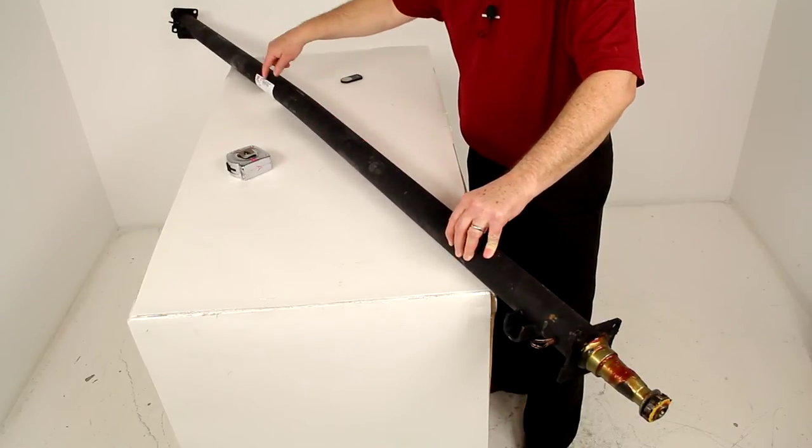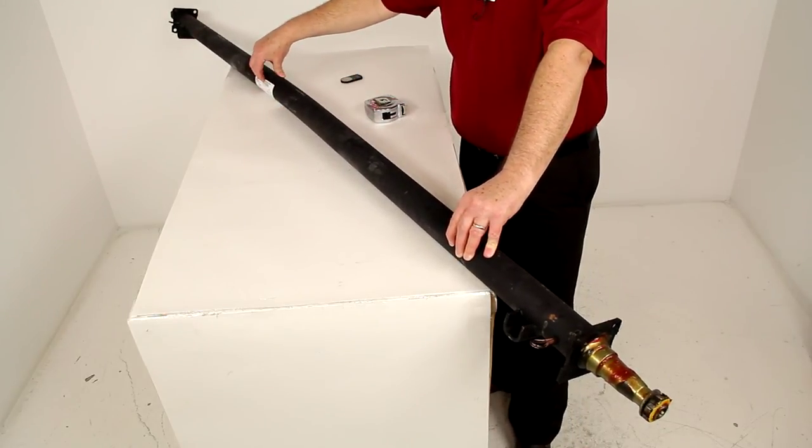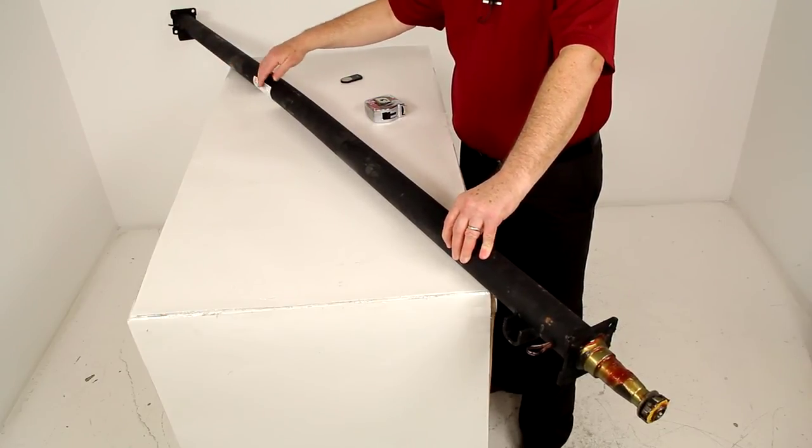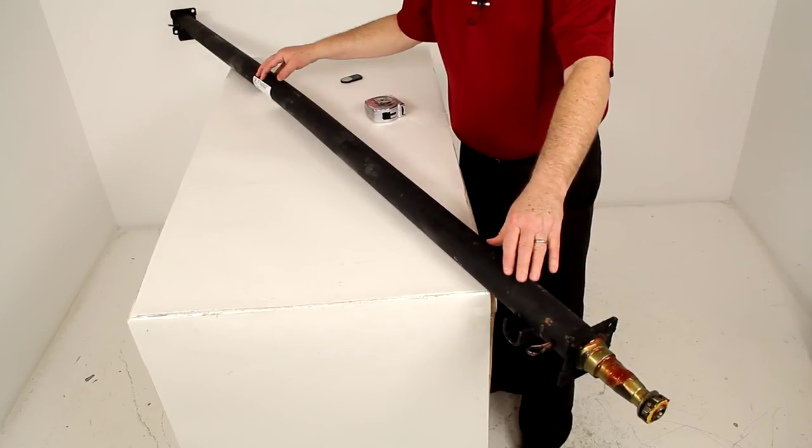Now one other note I just want to mention to you, if you'll notice the sticker right over here, this white sticker, this is the manufacturer sticker. Now this will always face the rear of the trailer. So this axle, when it's positioned, this will face the rear. So this will be the left side of the trailer, this will be the right side of the trailer.